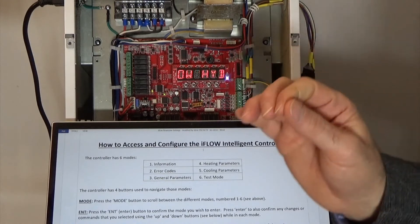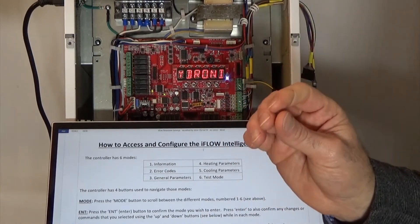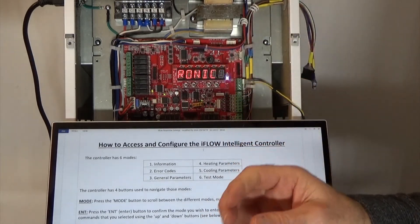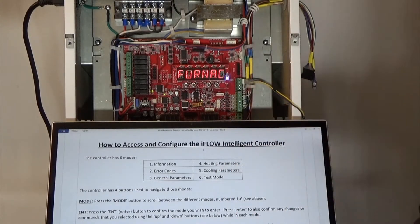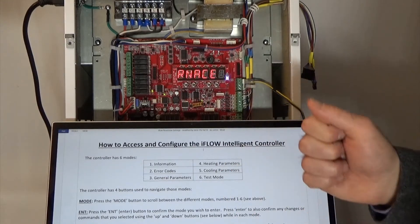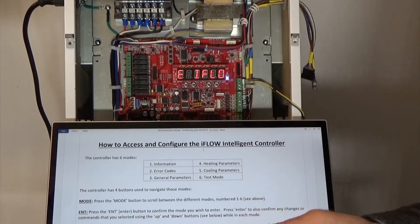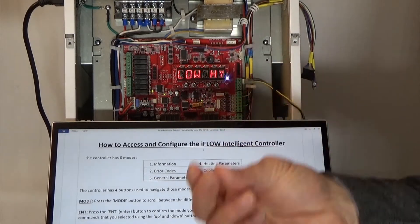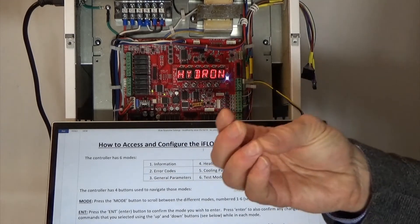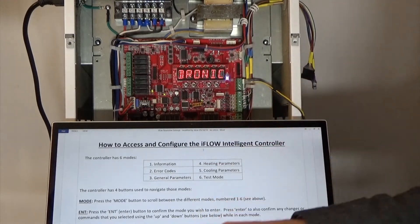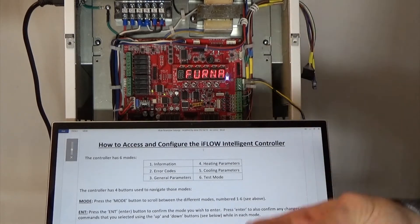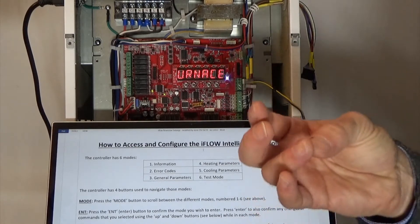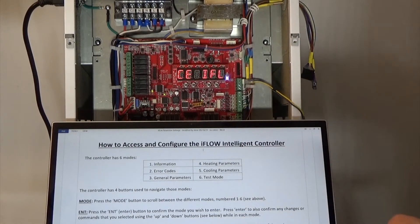On the Wi-Fi and both zoning models — the D models and the Q models — we have six modes: information mode, error code mode, general parameter mode, heating mode, cooling mode, and test mode.